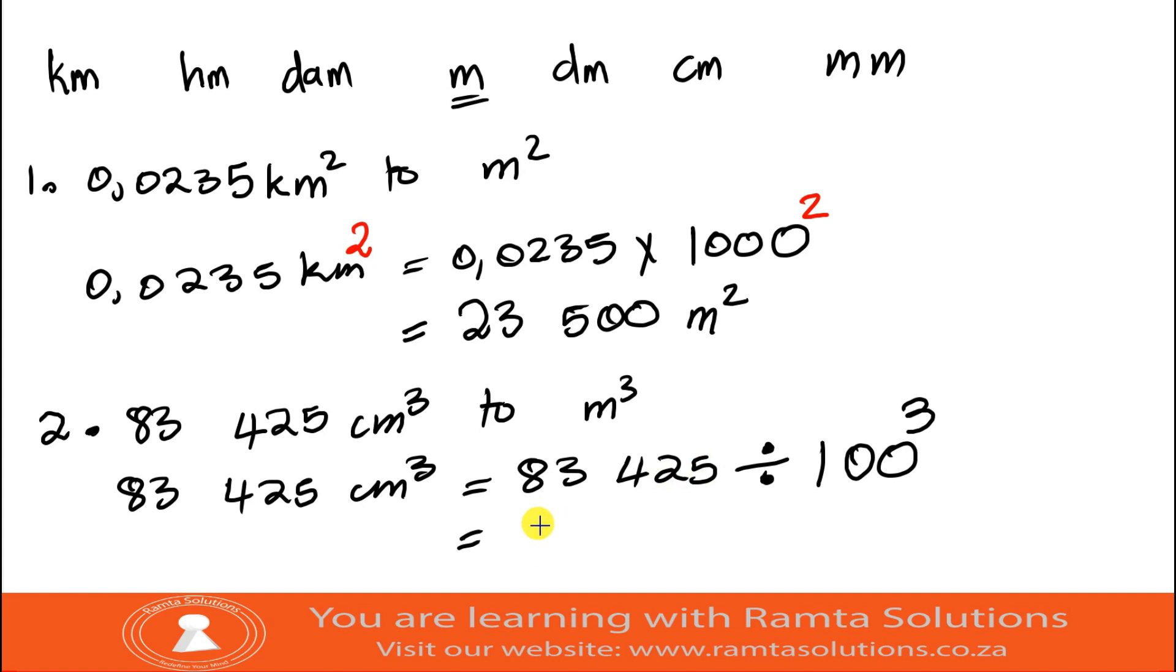Our answer is, I'm not going to round it off, I'm just going to write it as it is, so it'll be 0.083425 cubic meters. Okay guys, so this is how you convert between area and volume.